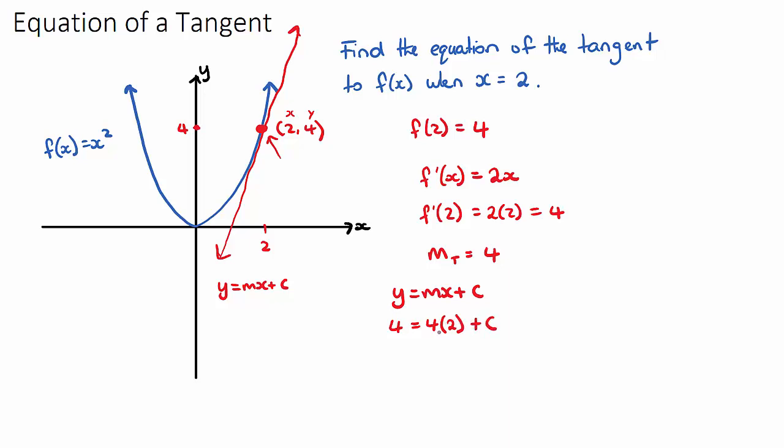So 4 is equal to 8 plus c. And if I move the 8 over as a negative, c will be equal to negative 4. And once I have c, I now have my equation of my tangent, because y equals m, which was 4, x minus c, which is minus 4. So that's the process of finding the equation of a tangent.